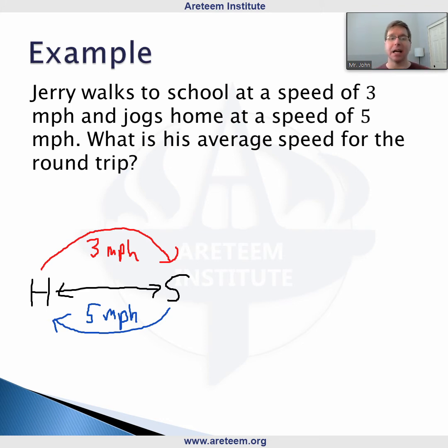A lot of the times you could just pick a nice number. But let's just assume here that the distance between home and school is going to be d miles, just so we have a nice variable in this case. So d miles from home to school.